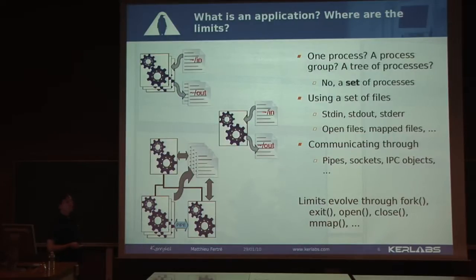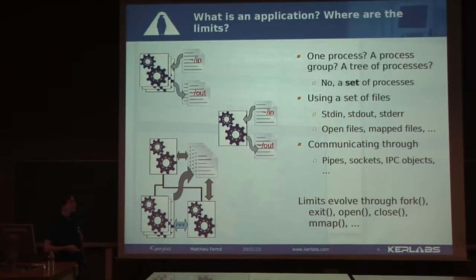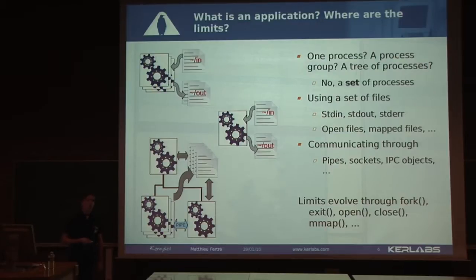An application is not only processes — it also includes files. You need files for your application: mainly the terminal, but also open files, memory-mapped files, and so on. Of course, your processes are probably communicating together with pipes, sockets, IPC objects, and so on. The limits of an application evolve during its life — it evolves with fork, exit, open, mmap, and so on.